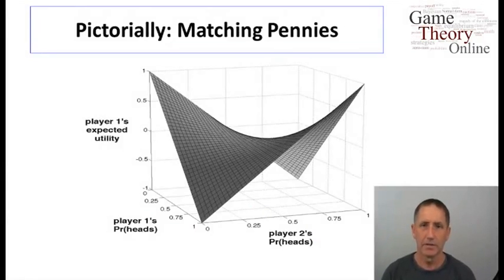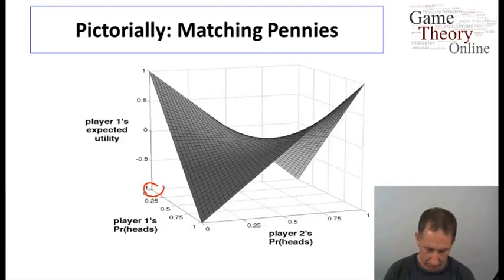So here again is matching pennies. And now we look at this three-dimensional surface, which is all the payoffs to the first agent, and therefore minus the payoff to the second agent, given any strategy they might pick. So for example, if we look at this point right here, at this point, both players are playing heads with probability zero. And so therefore, the first player wins and gets one. On the other hand here, the first player is playing heads with probability one, and the second player is playing it with probability zero. They mismatch, and therefore the payoff to the second agent is maximal.